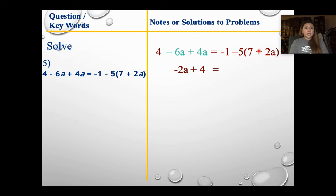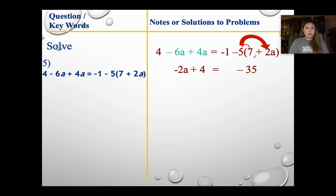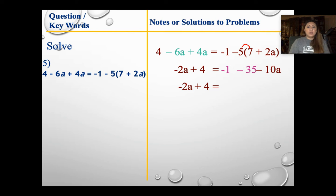On the right side, I'm going to distribute. I can't add these two, so my left side is done. Negative 5 times 7 gives me negative 35. Negative 5 times positive 2a gives me negative 10a. Then bring down my negative 1. Nothing is going on with the left side so I bring that down. On the right side, do I have any like terms? Yes — I have negative 1 and negative 35. Both are the same sign, so add and keep. Nothing happening to the negative 10a so I bring that down. Negative 1 and negative 35 gives me negative 36.